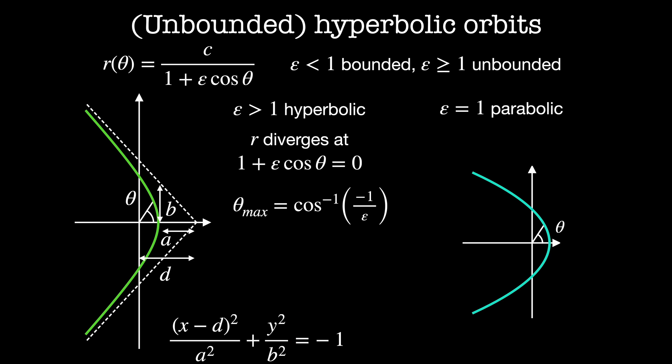When epsilon equals exactly one, we have a parabolic orbit. This occurs with probability measure zero. The radius diverges when theta equals plus or minus pi, and the implicit equation for the parabola is y² = k² minus 2kx.